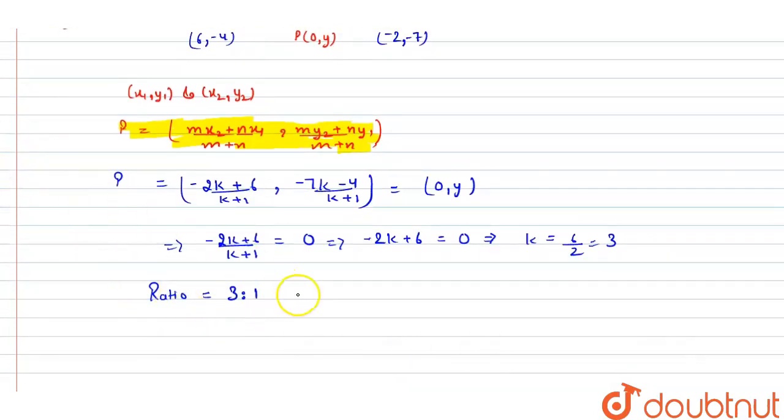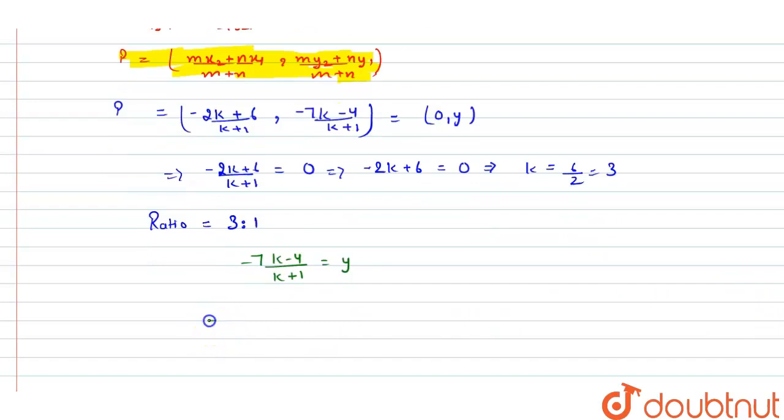That is (-7k - 4) divided by (k + 1) equals y. As value of k is 3, so substituting here what we are getting: we are getting here (-21 - 4) divided by 4, which is -25 by 4.